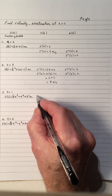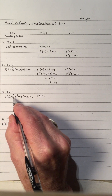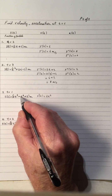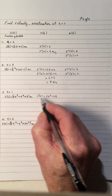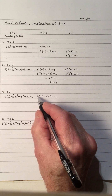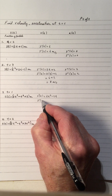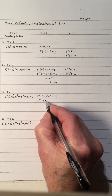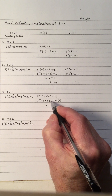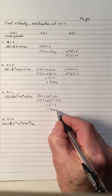Now let's find s prime of t for the next example. We do the derivative: 2 times 3 gives 6t squared, negative 1 times 2 gives negative 2t, and the derivative of 3 is 0. That's the velocity, which is s prime. So the velocity at 1 second — we put 1 in for t: 1 squared is 1, so that's 6 minus 2, giving a velocity of 4 meters per second.